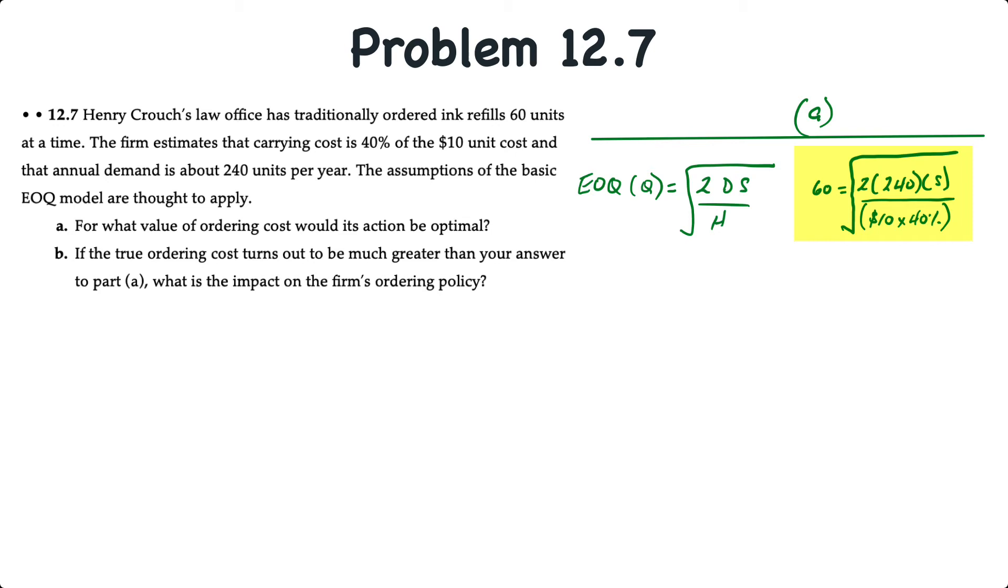If we reduce that a little bit, 60 is equal to 480S over 4. We'd have to take the square root of that. So to get rid of the square root, we'll square both sides of the equation. So 60 squared is equal to 480S over 4. So we'll cross multiply. We know that 60 squared is 3,600 times 4. We'll make that equal to 480S. That 3,600 times 4 is 14,400 equals 480S. And therefore, the holding cost S is equal to 14,400 divided by 480. And that's $30.